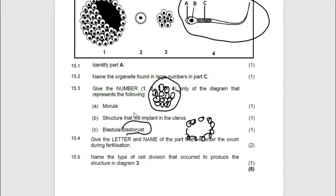A blastula is a hollow ball of cells — it must have a hole. So you look for something which has the hole. Basically, morula is going to be number three, and blastula is going to be number one.